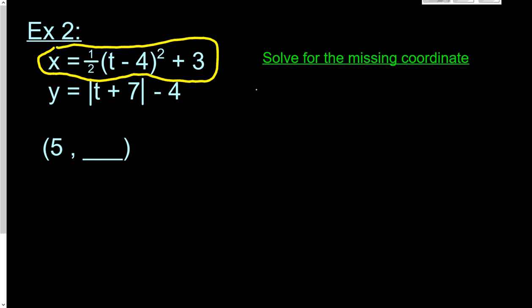So since x is 5, I'm going to start by plugging in 5 for x. So 5 equals one-half t minus 4 squared plus 3. And then we just solve for t, just like we did on example number 1. So subtract 3 from both sides. 5 minus 3 is 2.